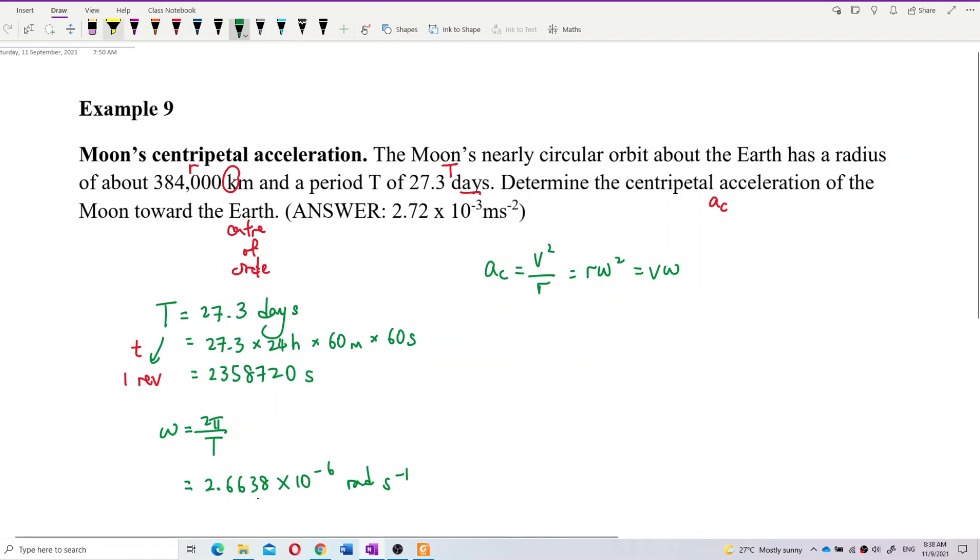So the next step is, we use the formula r omega squared because we have the r, we have the omega. Okay? Now remember the r, you need to change to SI unit also. Kilometer to meter. Okay, now let's do it. Yeah, the r is 384, 000 exponent 3, in meter already. Now omega is 2.6638 exponent negative 6, squared. Don't forget the square.